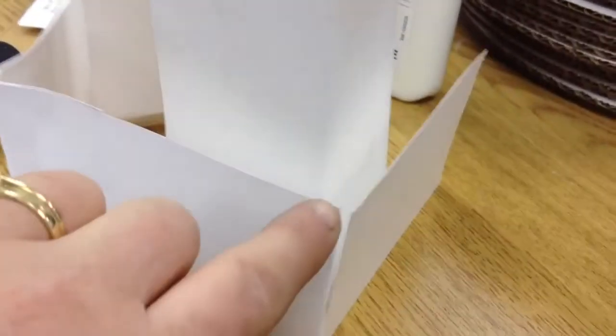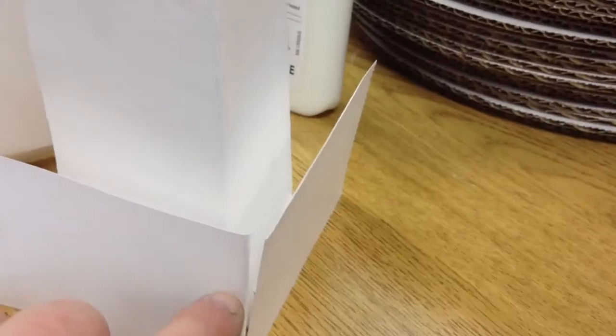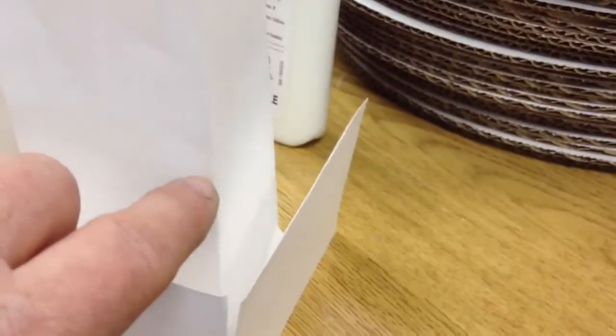So now as you see, I have these slits that go about three-quarters of the way down in each of these corners, and I'm going to overlap them and glue them in place so they meet this wall here.